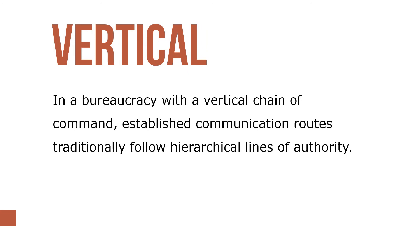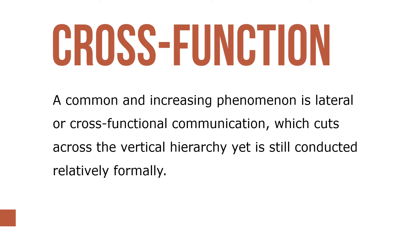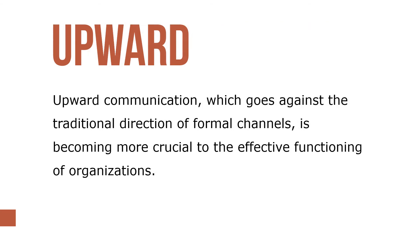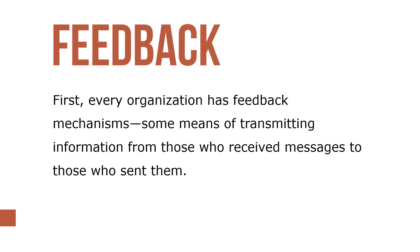In a bureaucracy with a vertical chain of command, established communication routes traditionally follow hierarchical lines of authority. A common and increasing phenomenon is lateral or cross-functional communication, which cuts across the vertical hierarchy yet is still connected relatively formally. Upward communication, which goes against the traditional direction of formal channels, is becoming more crucial to effective functioning of organizations. Every organization has feedback mechanisms — some means of transmitting information from those who received messages to those who sent them.